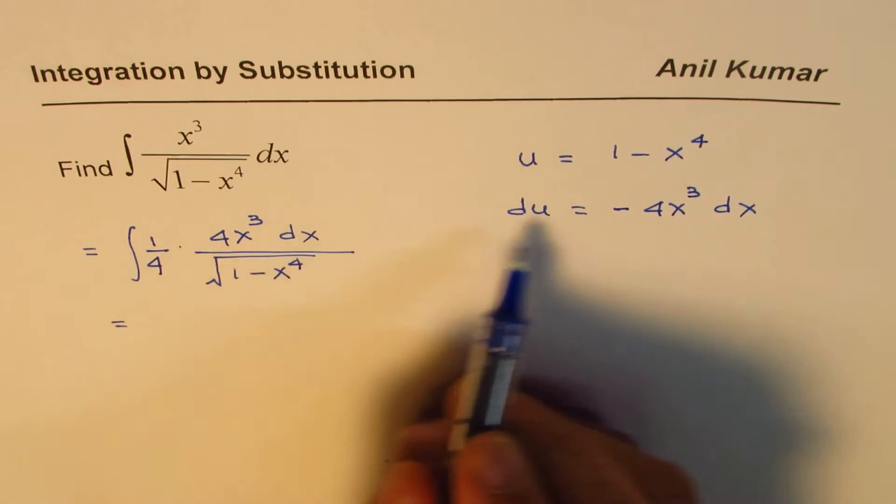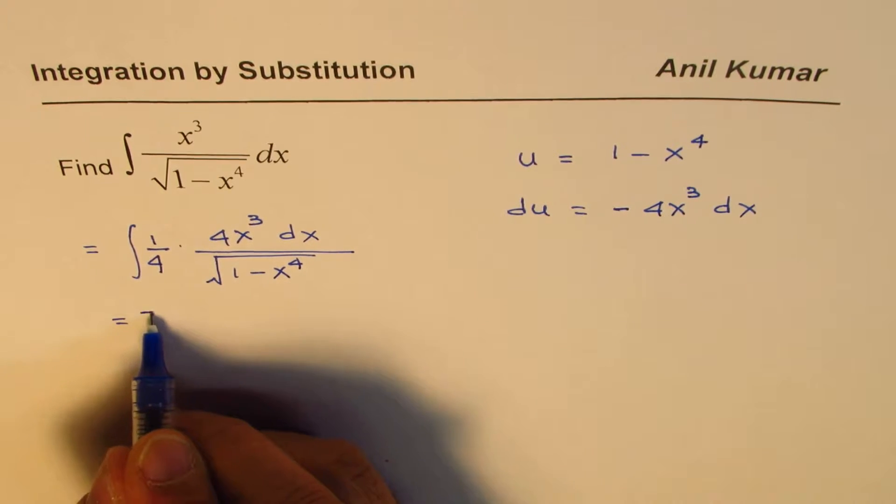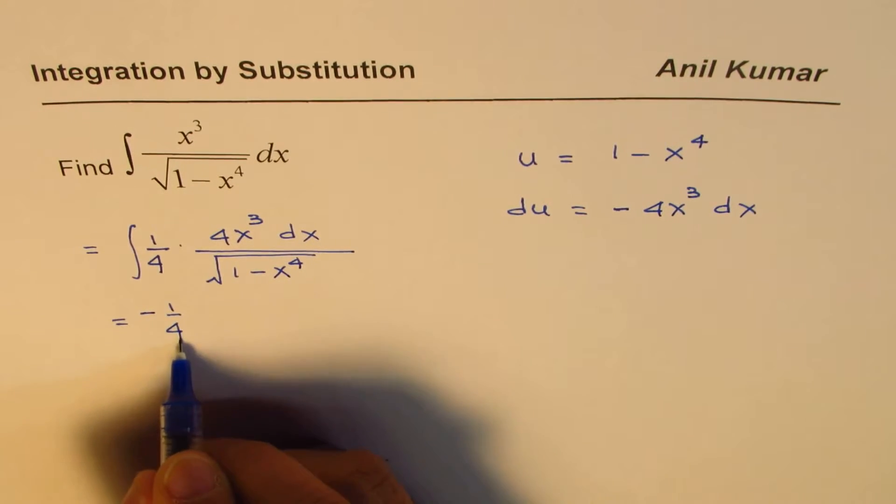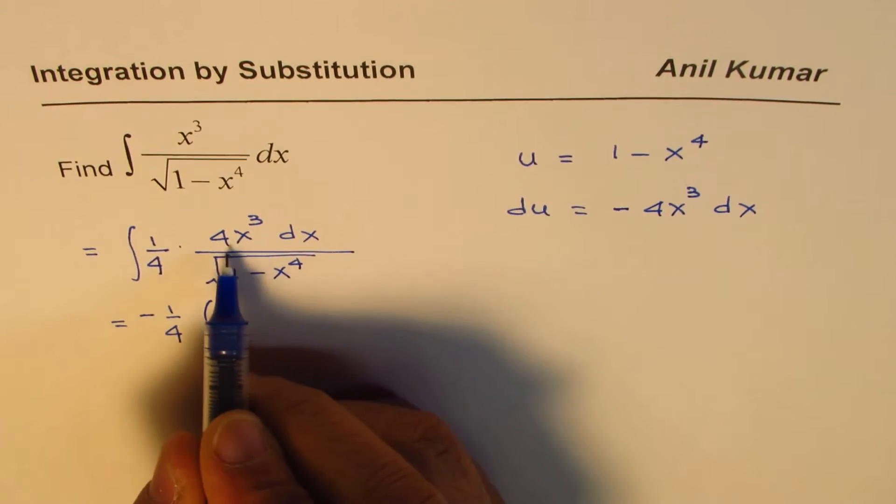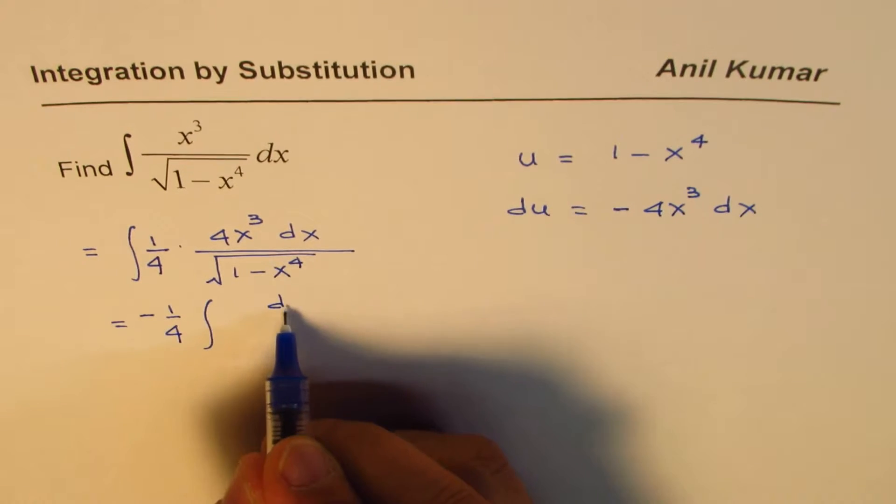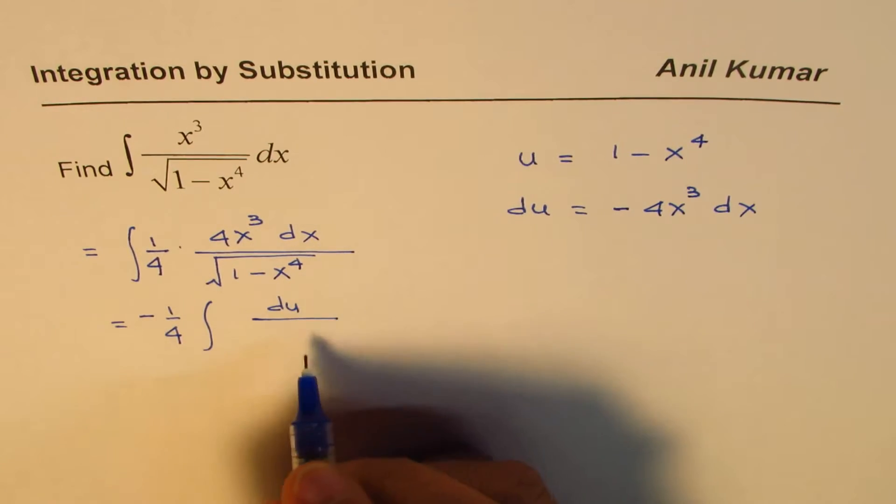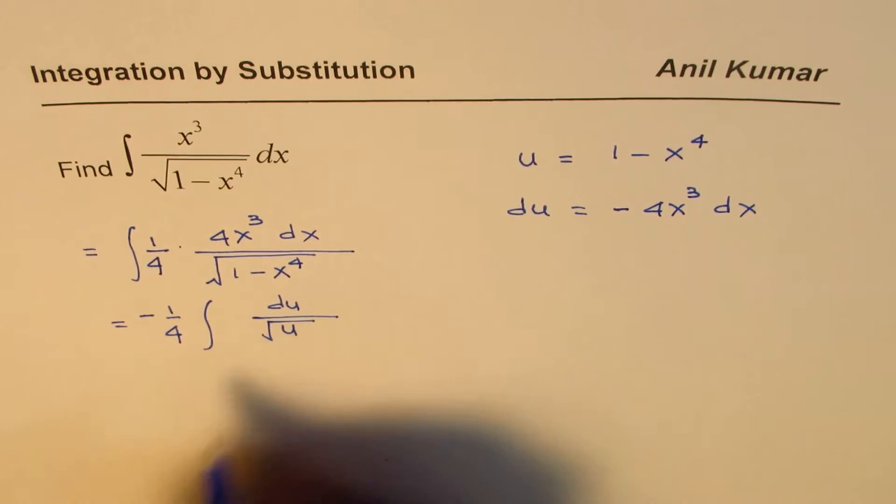we'll take minus 1 over 4, integral of 4x cube, this is du. And here we get u to the power of half, u to the power of half or square root of u for the time being.